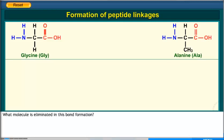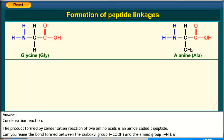What molecule is eliminated in this bond formation? Answer: A water molecule. What kind of reaction has occurred? Answer: Condensation reaction. The product formed by condensation reaction of two amino acids is an amide called dipeptide. Can you name the bond formed between the carboxyl group and the amino group?